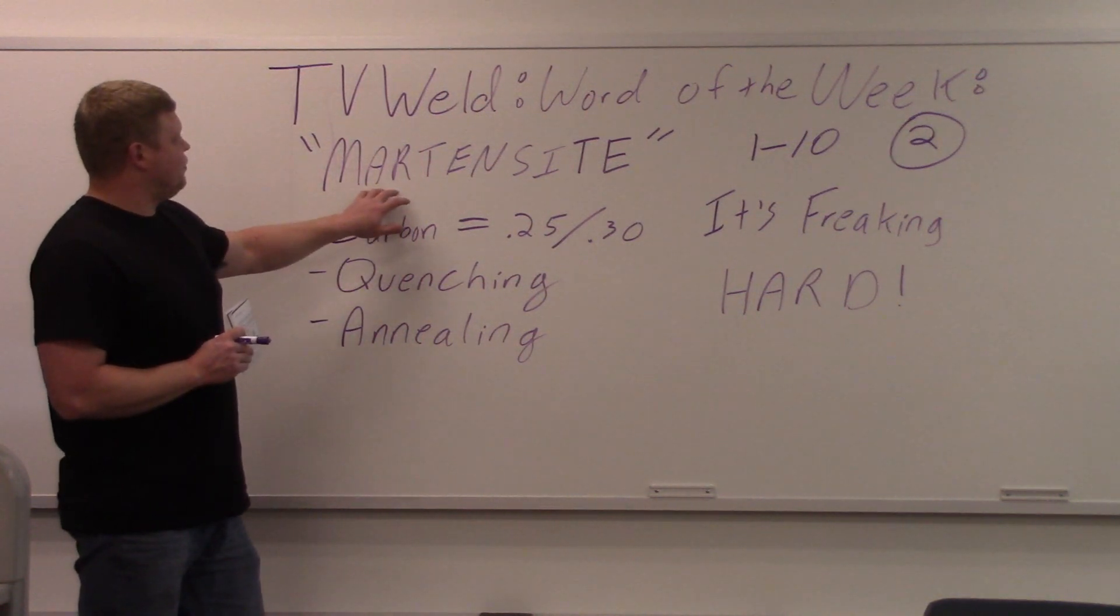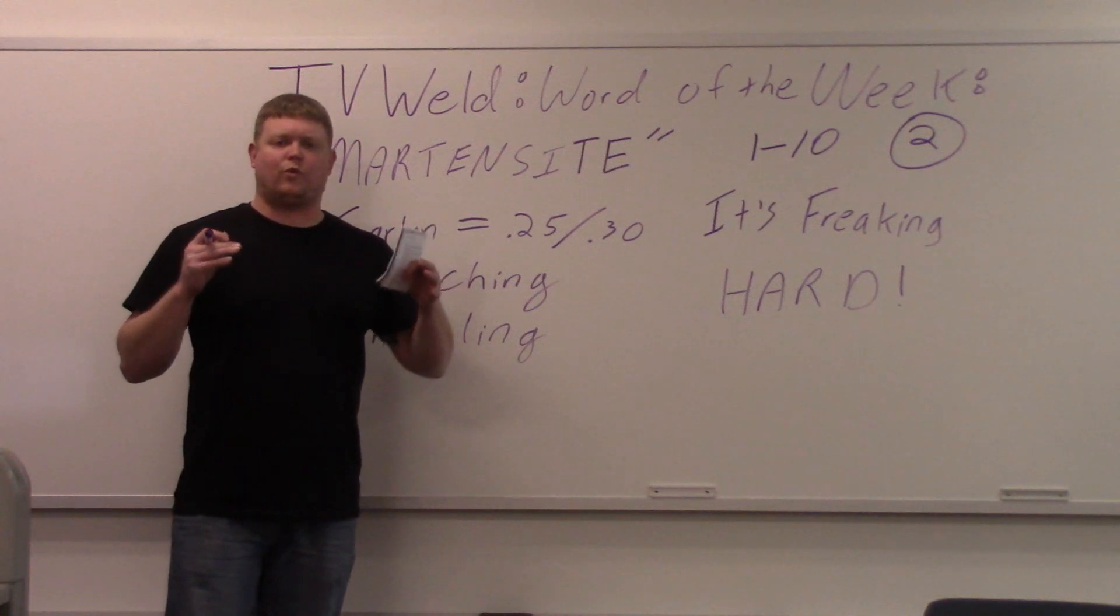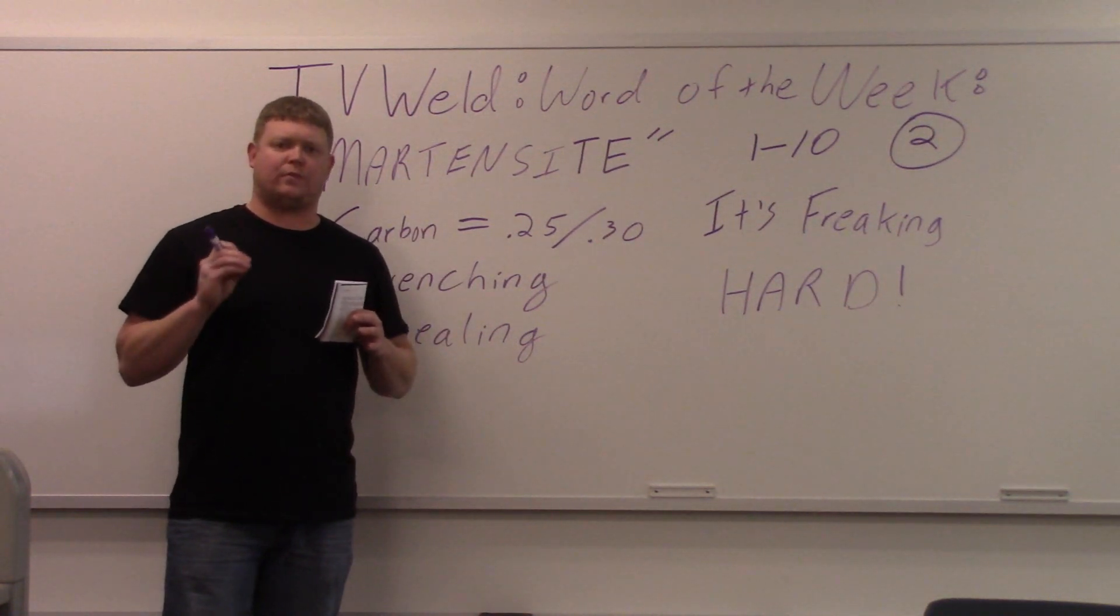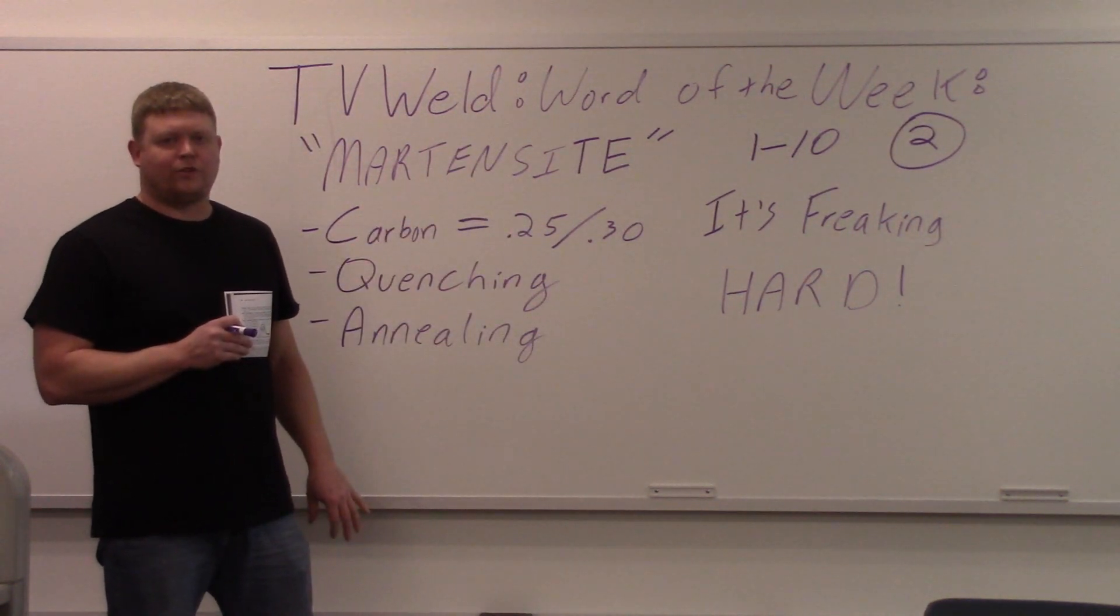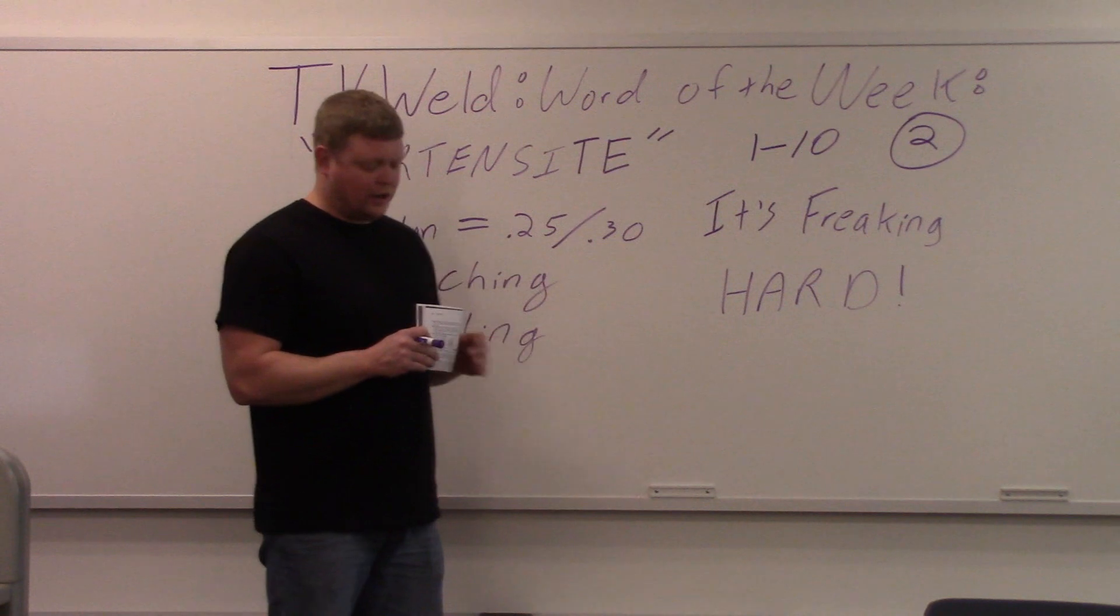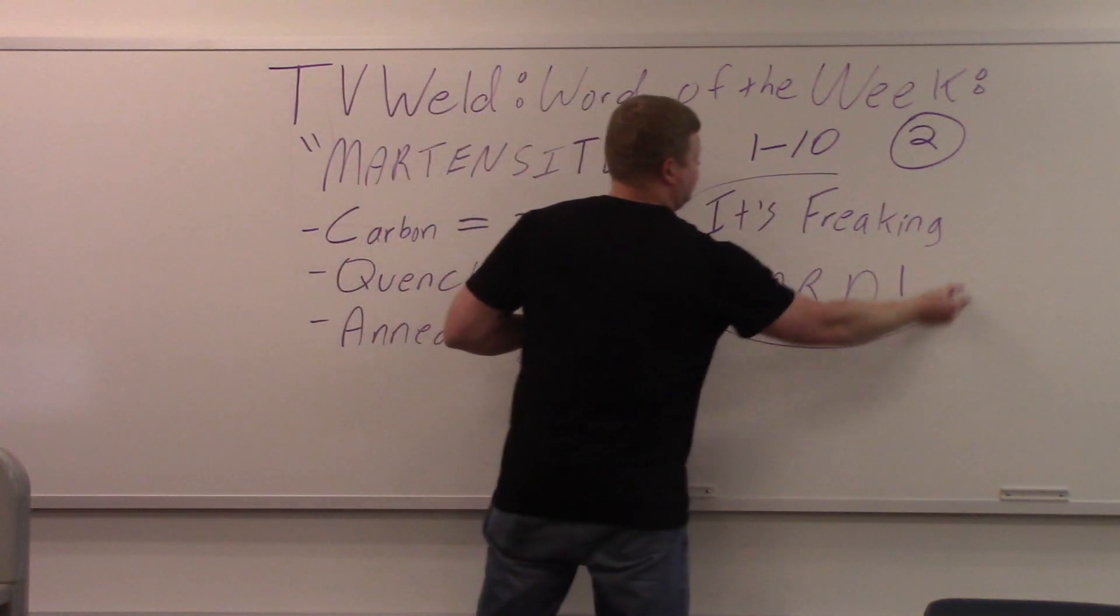Now Martensite is a transformation. It's a crystal microstructure. When you heat up carbon steels and you quench it, it forms a martensitic microstructure. What does that mean? And I had wrote down all this stuff to do this, and I didn't write down the one thing that's the most important thing. It's freaking hard. So we're going to circle this. Martensite is a really hard microstructure.